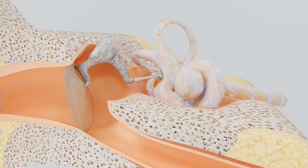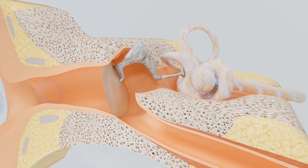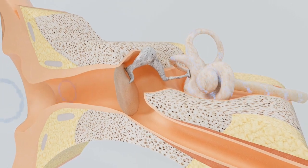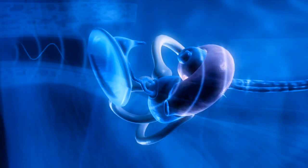Sound collection, outer ear. Sound waves are collected by the pinna, auricle, which funnels them into the ear canal, external auditory ear canal. Sound waves travel down the ear canal toward the eardrum.